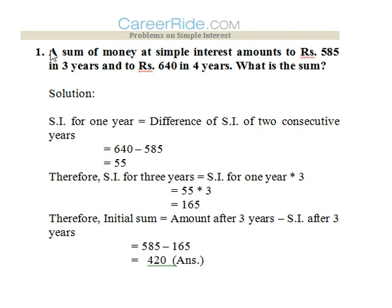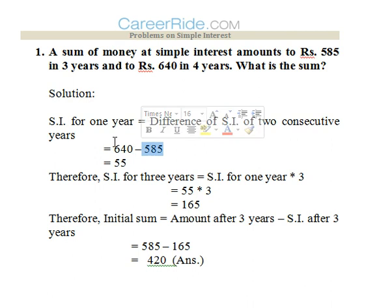The first question: A sum of money at simple interest amounts to rupees 555 in 3 years and to rupees 640 in 4 years. We have to find out the sum. Simple interest for 1 year is equal to the difference of amounts for consecutive years. 640 is the amount for 4 years and 555 for 3 years, so we can clearly see the increment from the 3rd year to the 4th year is 55.